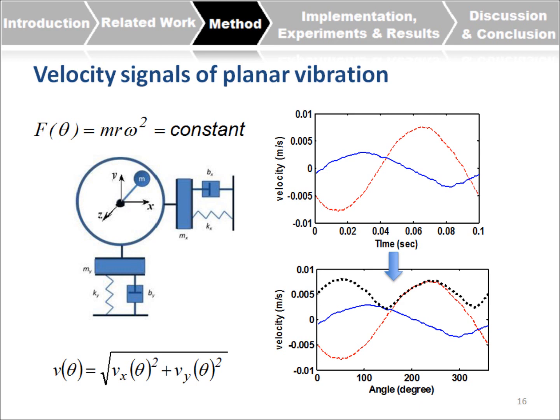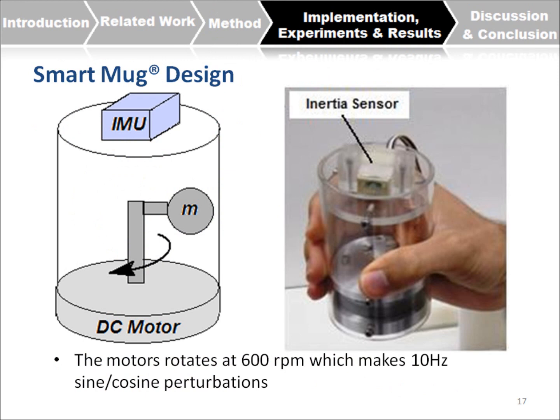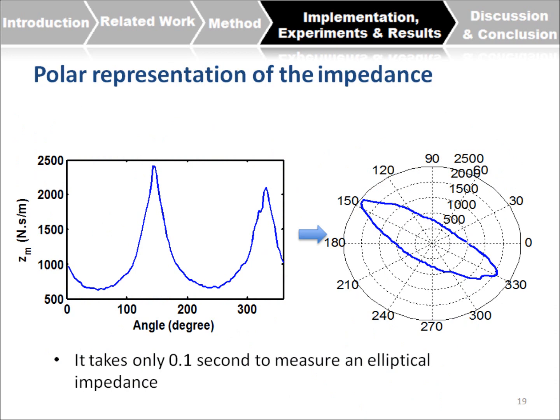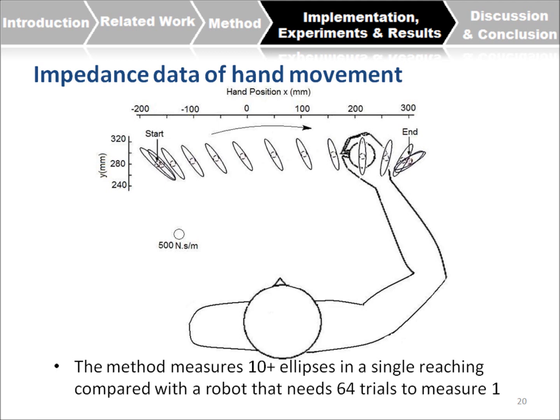The device design uses a DC motor that rotates a mass and an IMU sensor that measures the response to the perturbation. The rotation frequency is 600 RPM, which is 10 Hz, so the mass rotates 10 times per second. Taking the acceleration signal, integrating it, and transferring it to angle space, then combining X and Y velocities, we use the equation dividing force by velocity to get impedance in every direction. Plotting impedance in every direction on a polar diagram reveals the major and minor axes expected from robotic measurements.